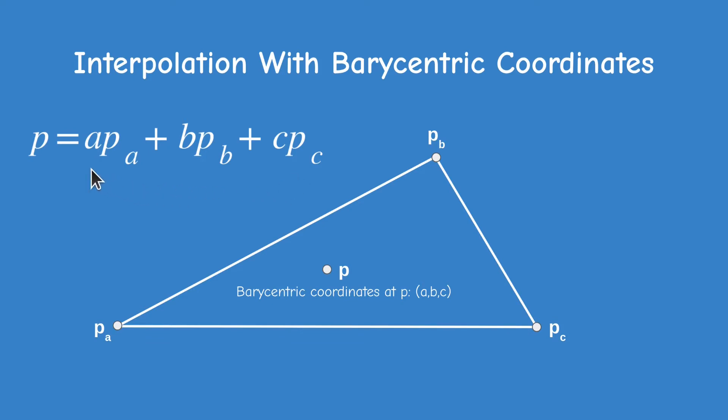In a stricter mathematical language, we can say that the interpolated value at point P is a linear combination of the barycentric coordinates at that point and the corresponding attributes at the vertices. Since we know the values of the attributes at the vertices, the only thing that remains is to find out the barycentric coordinates at each point inside the triangle.